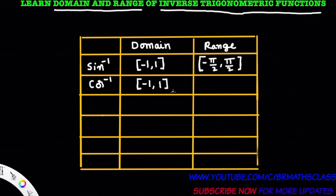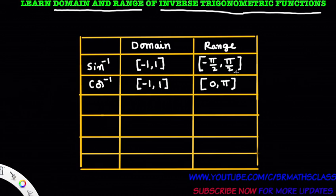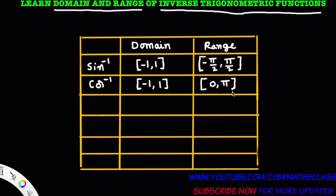The range of cosine inverse is the closed interval 0 comma pi. To summarize: domain of sine inverse is closed interval minus 1 comma 1, range of sine inverse is closed interval minus pi by 2 comma pi by 2, domain of cosine inverse is closed interval minus 1 comma 1, and range of cosine inverse is closed interval 0 comma pi.